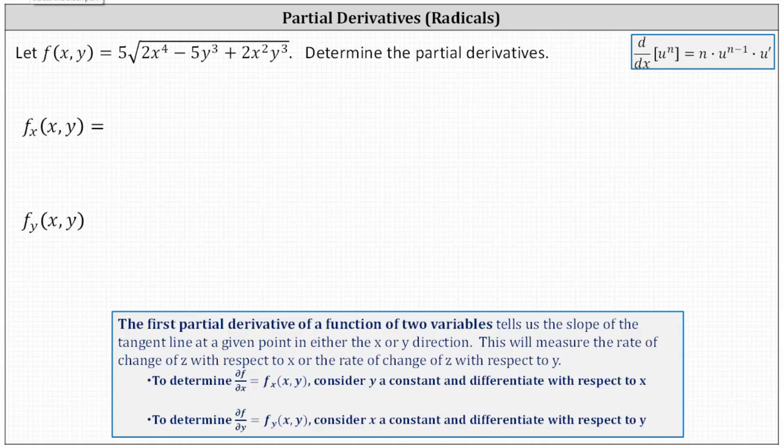Given f of x comma y, determine the partial derivatives. To find the partial of f with respect to x, we differentiate f with respect to x, treating y as a constant.